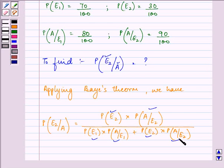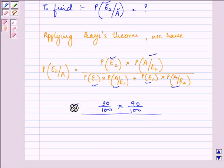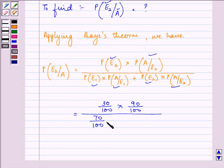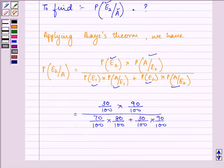So we have it as 30% times 90% divided by 70% times 80% plus 30% times 90%. What we have done here is substituted the values found above that are given in the question. Now simplifying it,